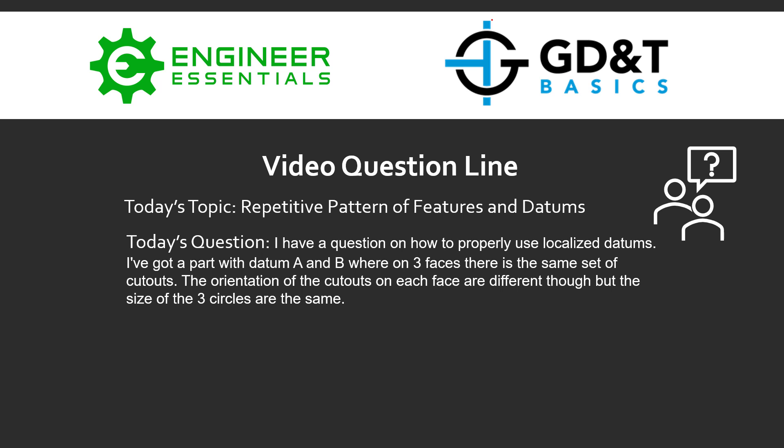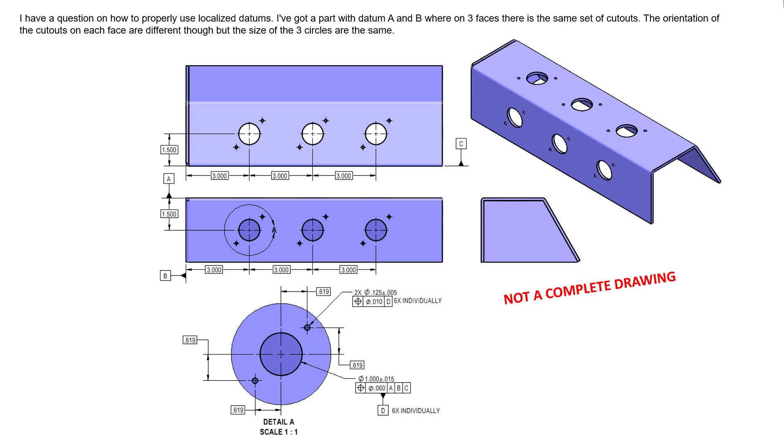The orientation of the cutouts on each face are different with respect to the datum reference frame, but the size of the three circles are the same. The question goes on to ask how is it best to control this repetitive pattern of cutouts. There's actually a tool within the standard ASME Y14.5 that allows us to control the location of features around one main feature individually. Let's take a look at this drawing here.